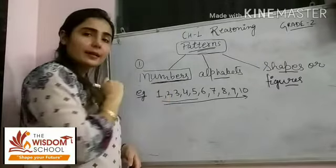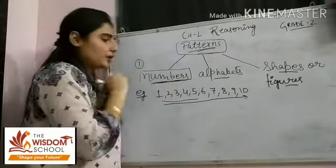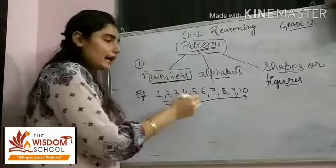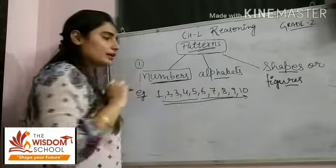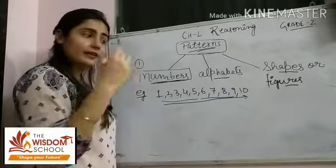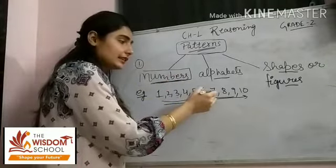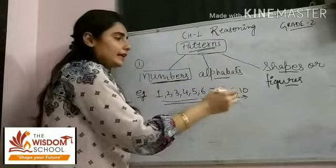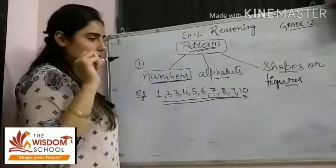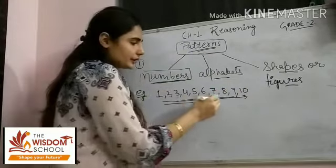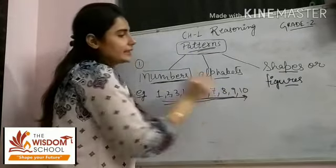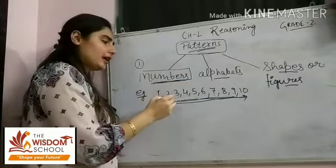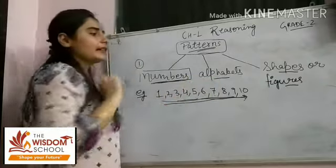But why? Batao — because yeh jo counting hai bachon, yeh ek order mein given hai. Jaise 1 ke baad 2 aata hai, 2 ke baad 3, 3 ke baad 4 — aur aage bhi bachon humne ek proper sequence mein likha hai, line wise. 5 ke baad 6, 6 ke baad 7, 7 ke baad 8, 8 ke baad 9, aur 9 ke baad 10. So now you can easily tell ki isko hum pattern kyon bolenge.